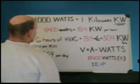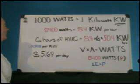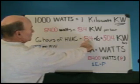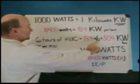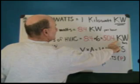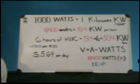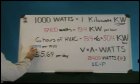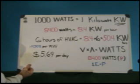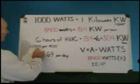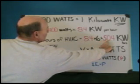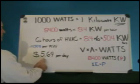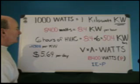So let's say you run your HVAC unit for six hours, using 8.4 kilowatt hours times six hours — that comes to 50.4 kilowatt hours. Nevada Power is charging me 11.308 cents per kilowatt hour. If you do the math and multiply that rate times 50.4 kilowatt hours, which is six hours of air conditioning, you come to $5.69 per day.